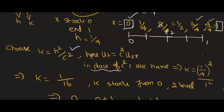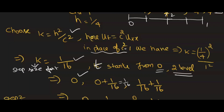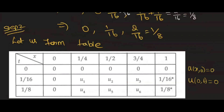So k = 1/16 is the step size for t. h is the step size for x. So t starts from 0, next step is 0 + 1/16 = 1/16, and then 1/16 + 1/16 = 2/16 = 1/8. They have mentioned two time levels, so we have t values: 0, 1/16, 1/8.